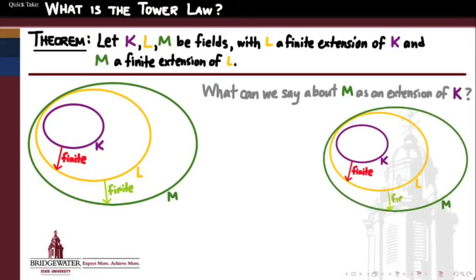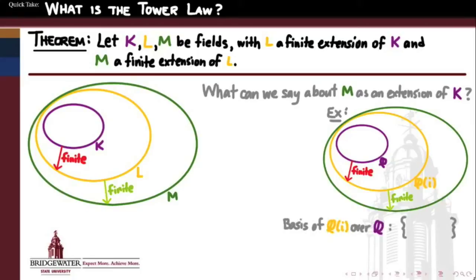As an example, let's take K to be the rational field Q, and L to be the Gaussian rationals, Q adjoined with i. That's a finite extension of degree 2. A generic element in Q(i) can be written as A plus Bi, where A and B are rational numbers. This means that 1 and i form a basis for the Gaussian rationals over Q — they're rationally independent, because A plus Bi equals 0 only if A and B are both 0.